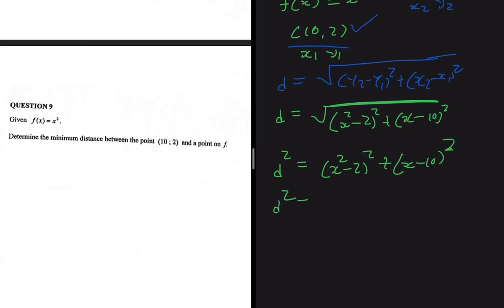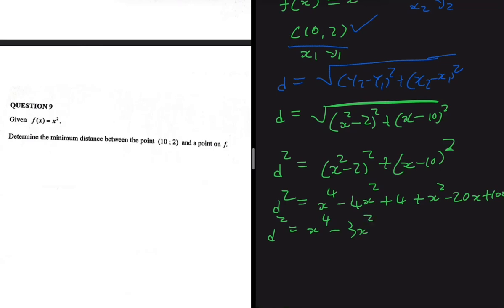Expanding d² = (x² - 2)² + (x - 10)²: we get x⁴ from x² · x², then -2 · x² · 2 gives -4x², plus 4, then x² from x · x, minus 20x, plus 100. Collecting like terms gives us d² = x⁴ - 3x² - 20x + 104.